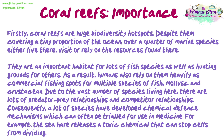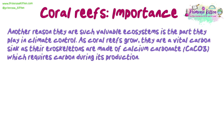Due to the vast number of species living here, there are lots of predator-prey relationships and competitor relationships. Consequently, a lot of species have developed chemical defence mechanisms, which can often be trialled for use in medicine. For example, the sea hare releases a toxic chemical that can stop cells from dividing. Another reason they are such valuable ecosystems is the part they play in climate control. As coral reefs grow, they are a vital carbon sink as their exoskeletons are made of calcium carbonate, CaCO3, which requires carbon during its production.